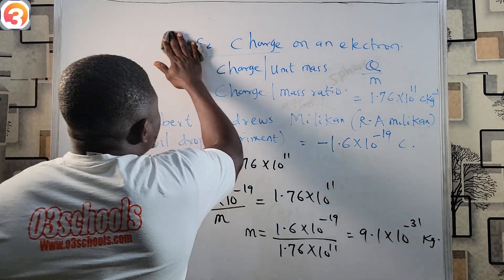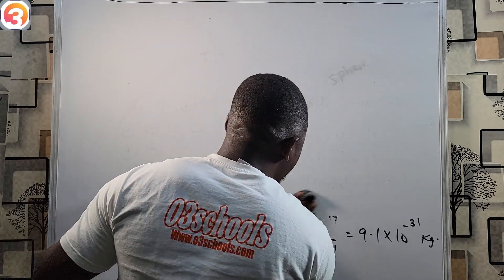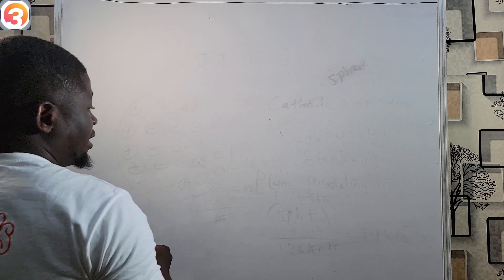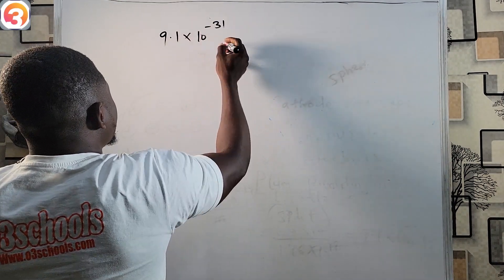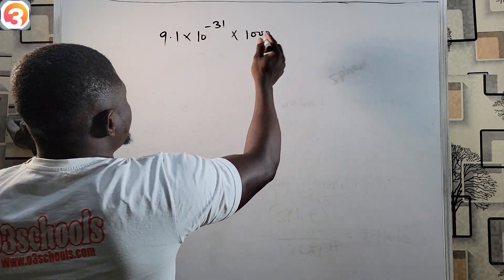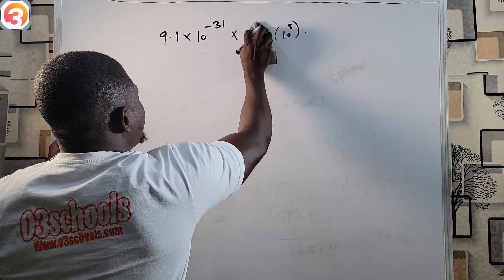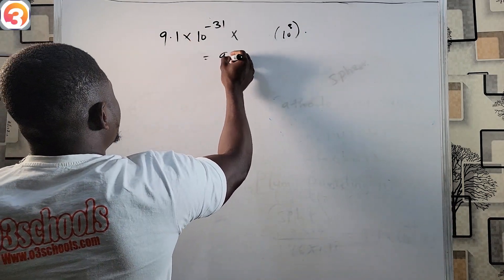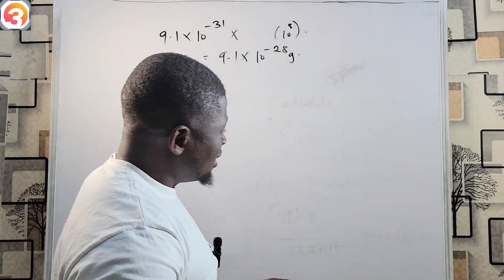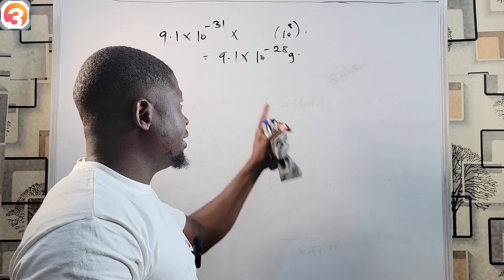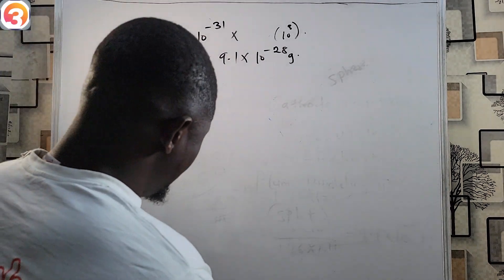The mass of an electron is in kilograms, so we can convert it to grams. To convert from kilograms to grams, simply multiply by 1000. So 9.1 × 10⁻³¹ kg × 1000 = 9.1 × 10⁻²⁸ grams. That is the mass of an electron in grams.